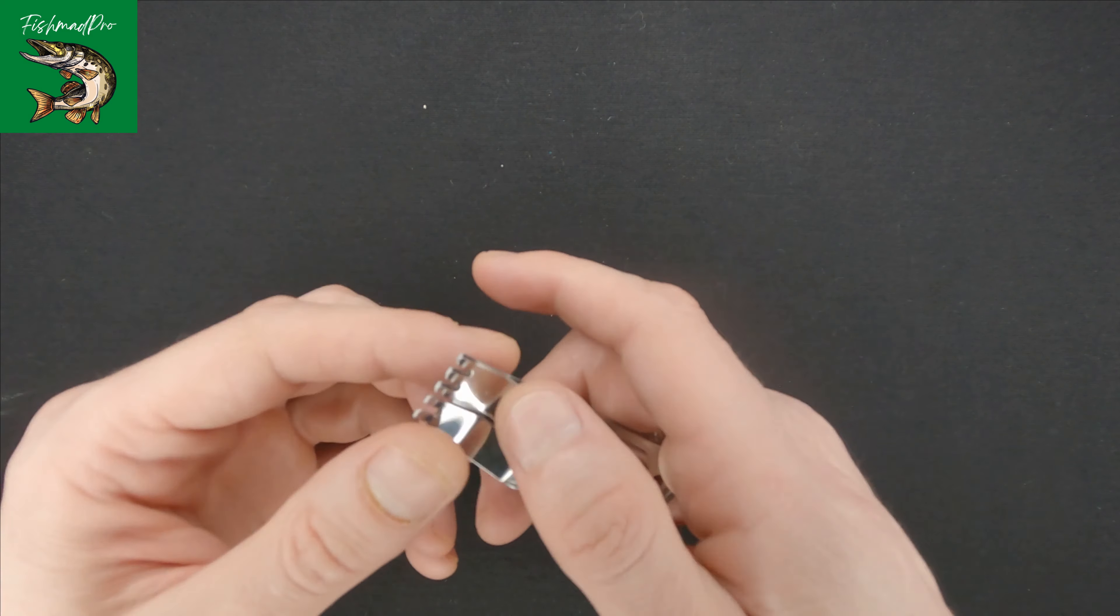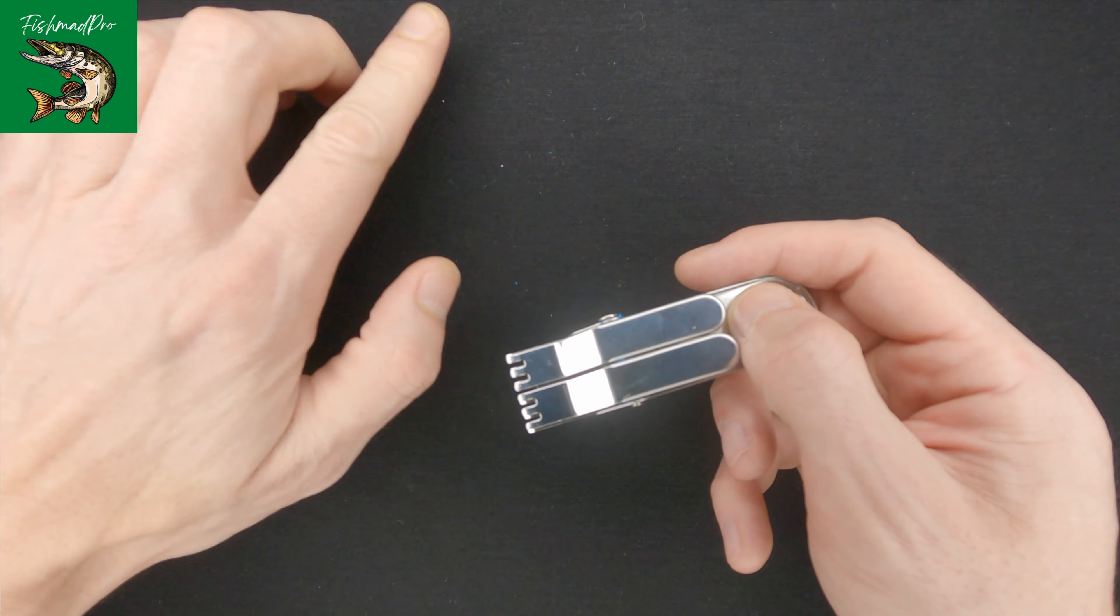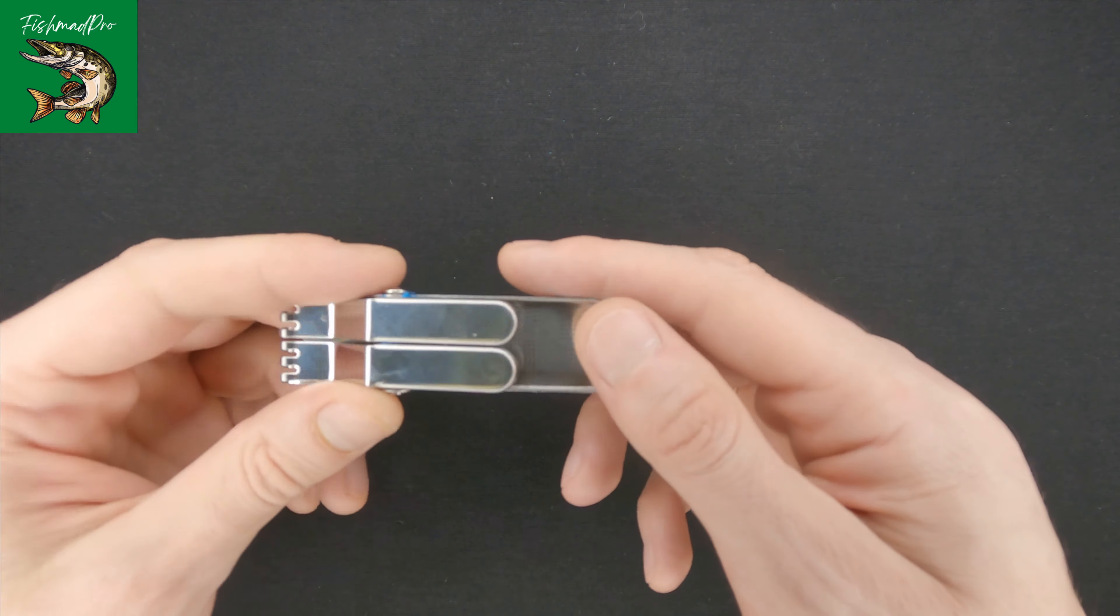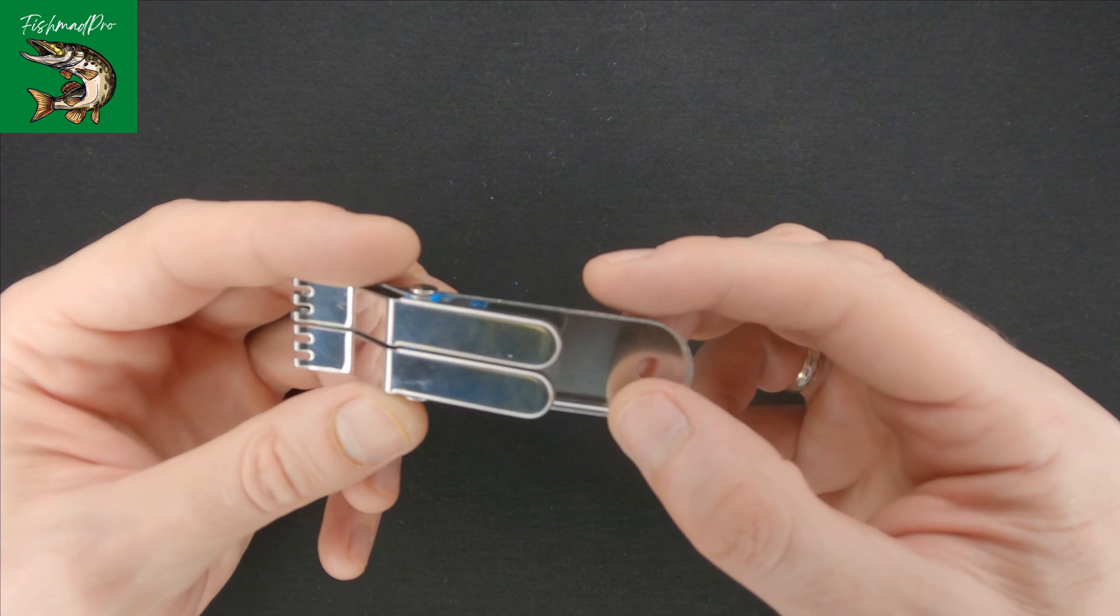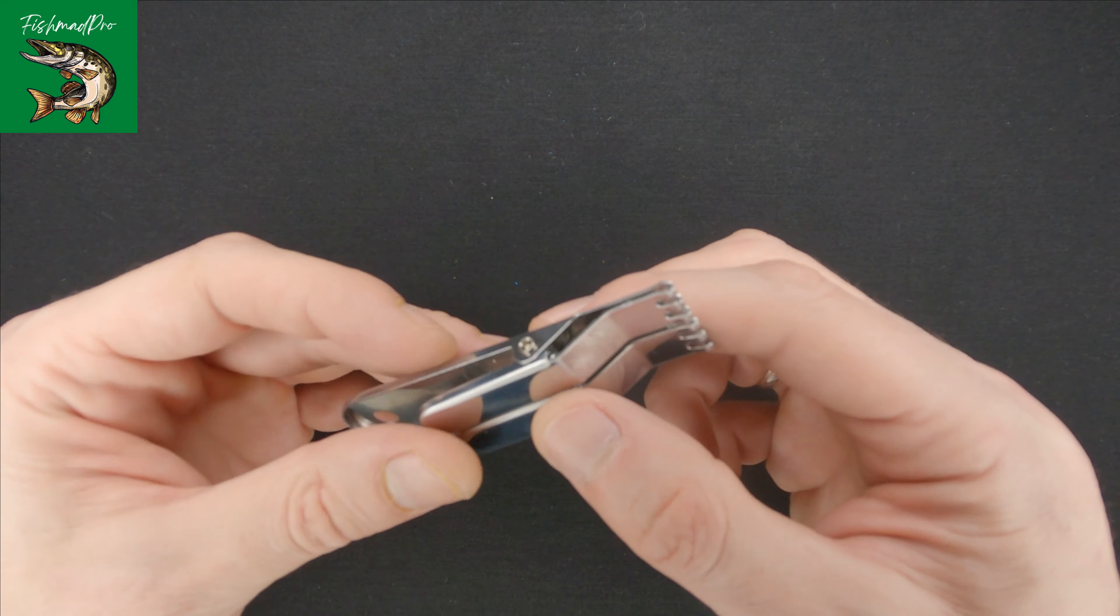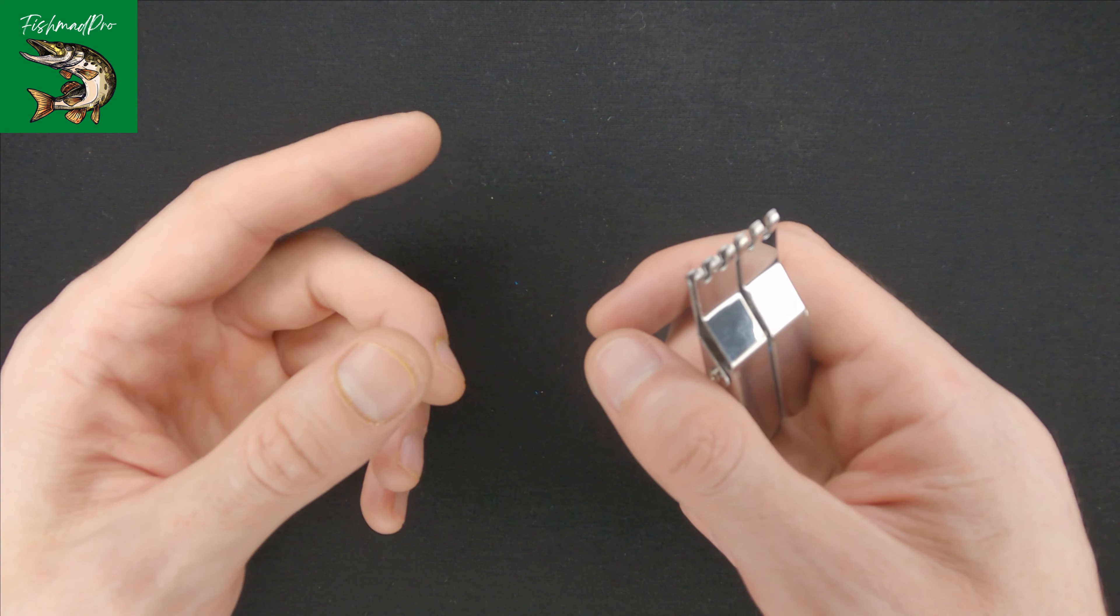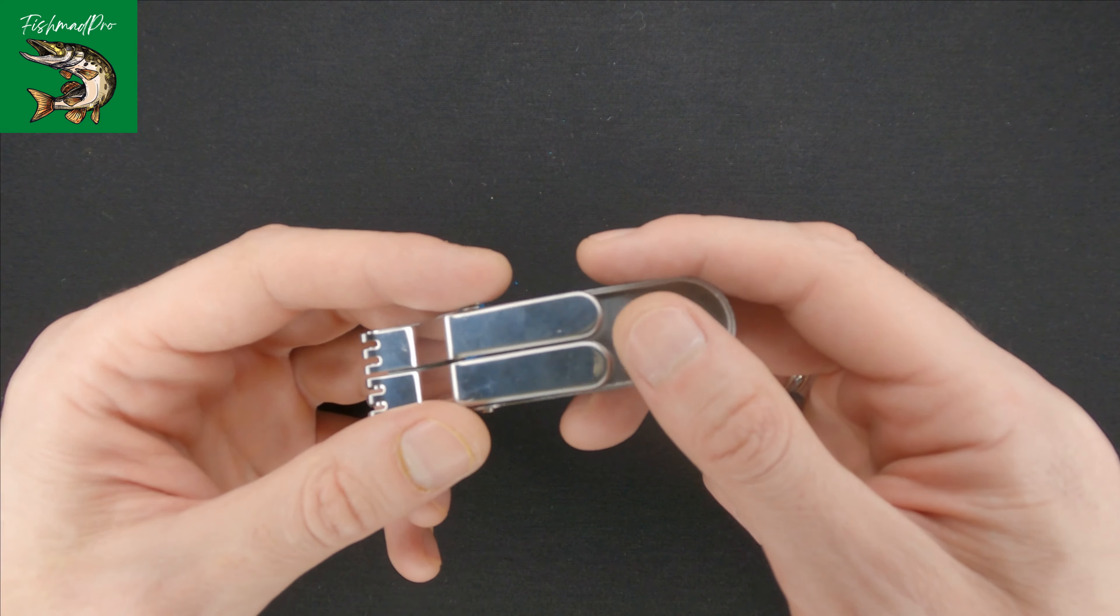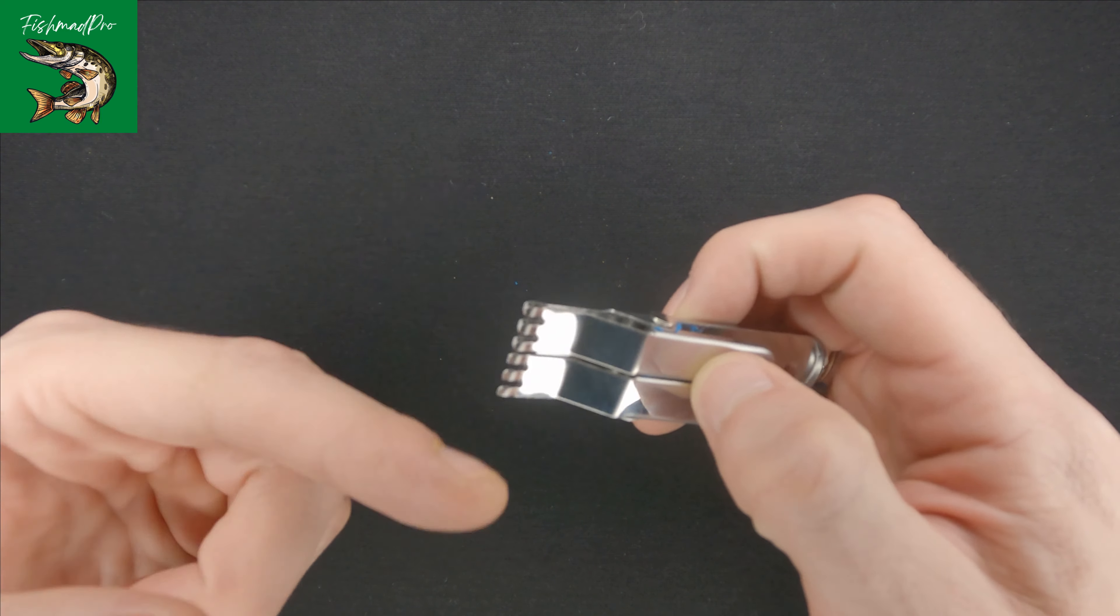I don't know if you've ever tried to put a worm on a hook, but probably the majority of you have done that. When you try to put it on a hook, it basically spins around and sometimes it becomes a bit frustrating. It can spin around the hook, so it's not very comfortable.